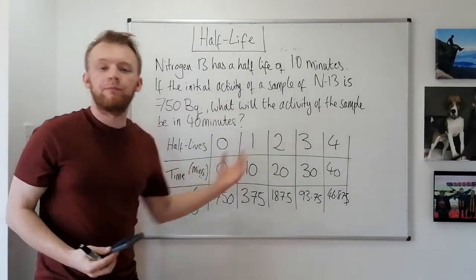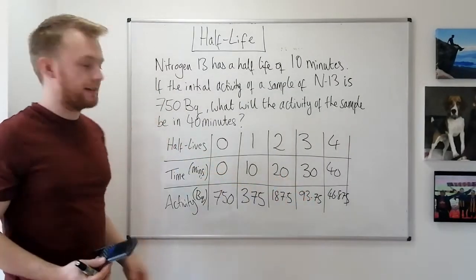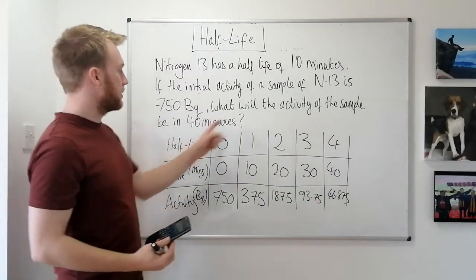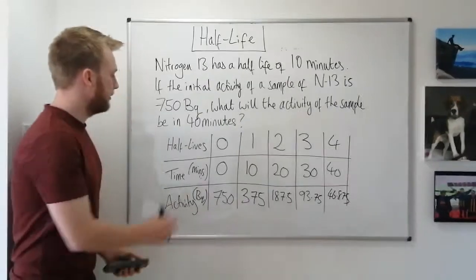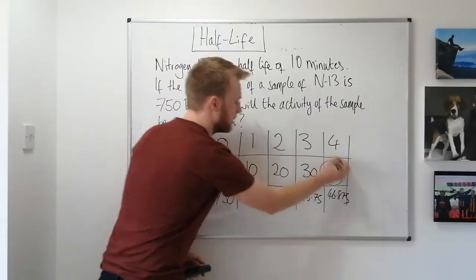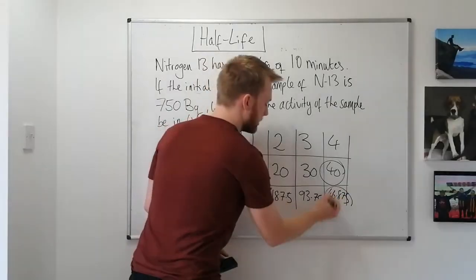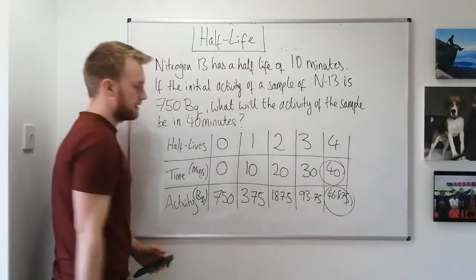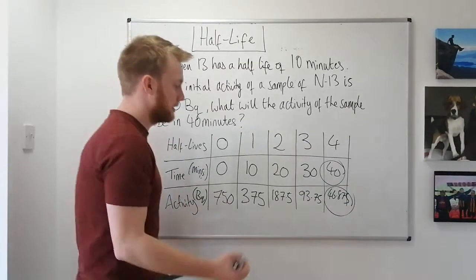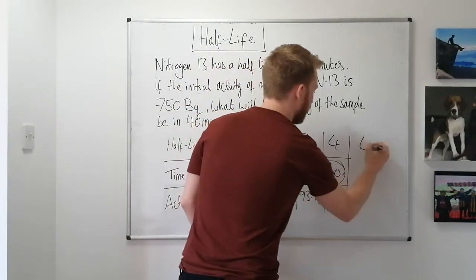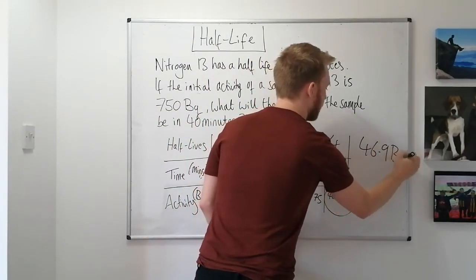Working through the table, I've reached the answer the question needs. After 40 minutes, what is the activity? That's 46.875 Becquerels — you could round that to 46.9 Becquerels.